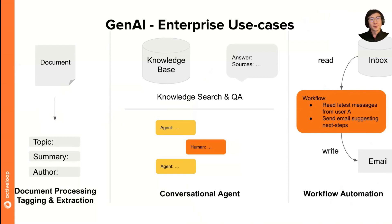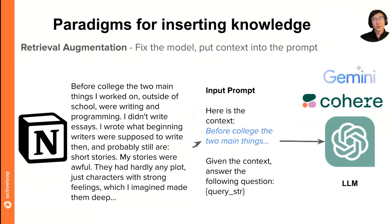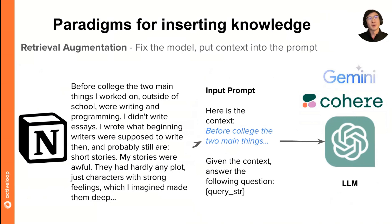What we're focused on is a lot on this retrieval augmentation use case, which is about indexing your private data and being able to ask questions over it, or basically being able to ground any sort of answers that the model gives in a relevant context that you provide.